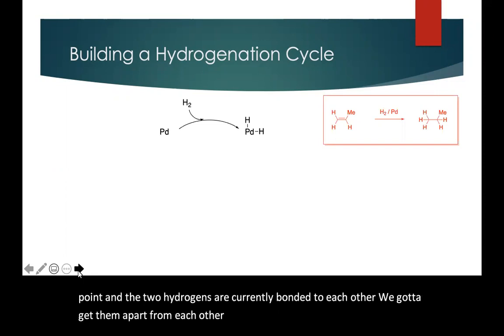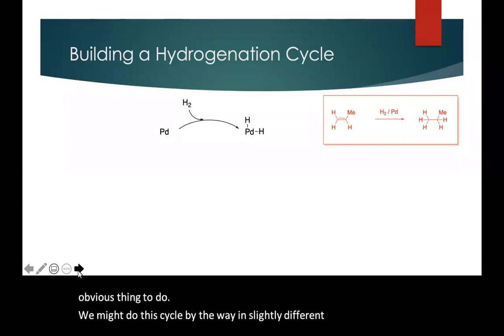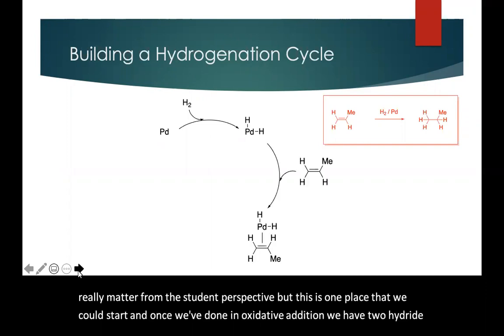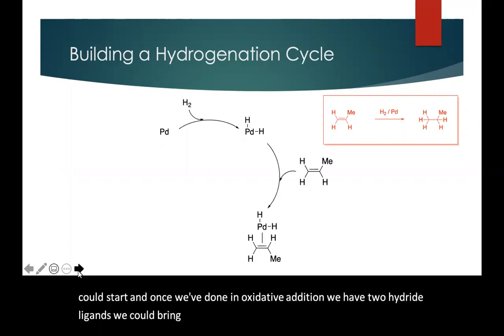So an oxidative addition seems like an obvious thing to do. We might do this cycle, by the way, in slightly different orders. It doesn't really matter from the student perspective, but this is one place that we could start. And once we've done an oxidative addition, we have two hydrogens. We could bring in the alkene and coordinate it to the metal. That's an association reaction.